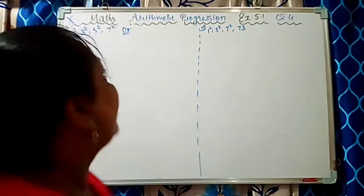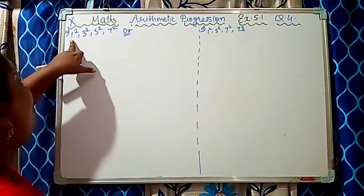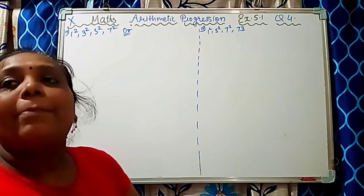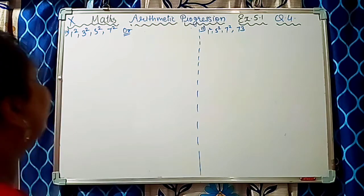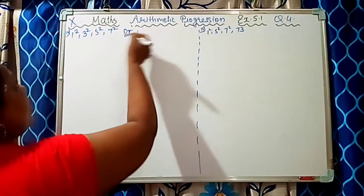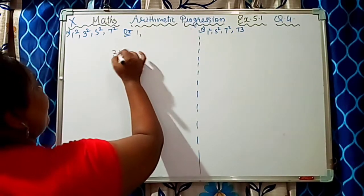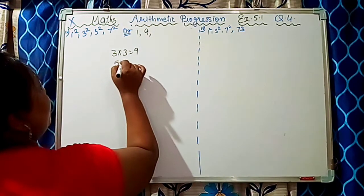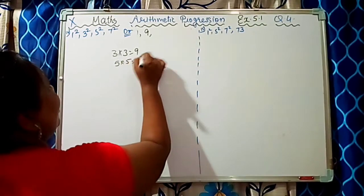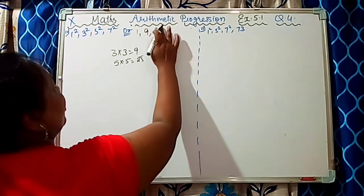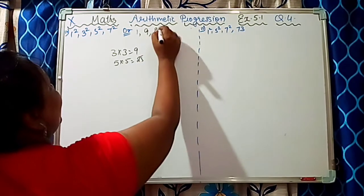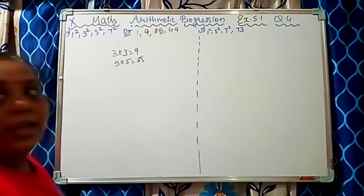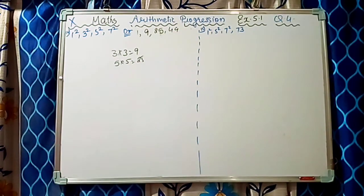So how we have to find a solution: the series is 1², 3², 5², 7². We know 1² is 1, 3² is 3 into 3 which is 9, 5 into 5 means 25, and 7 into 7 is 49.